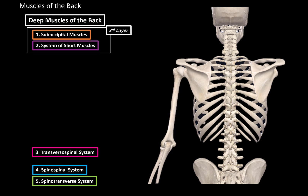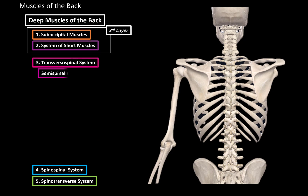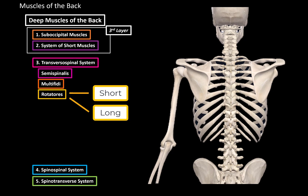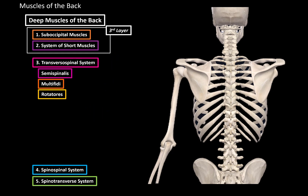Then we have the transversospinal system, which consists of the semispinalis, multifidi, and rotatores. The rotatores muscles consist of short and long muscle fibers. The short muscle fibers of rotatores are considered part of the third layer, since they're as close to the bones as the third layer. The long fibers of rotatores are considered part of the second layer, as the multifidi and semispinalis are.